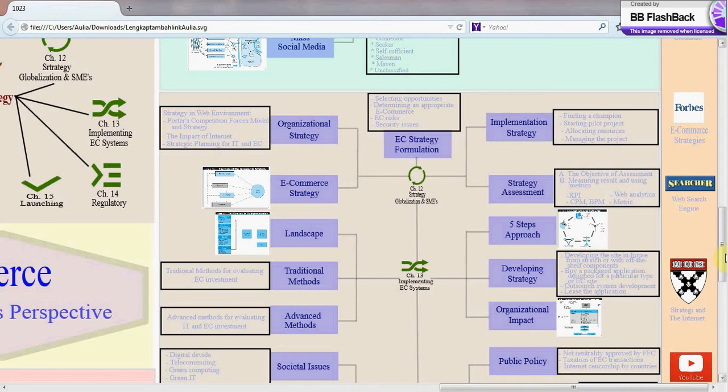What is electronic commerce strategy formulation? The strategy formulation of electronic commerce includes selecting opportunities, determining appropriate electronic commerce, considering e-commerce risks, and thinking about security issues. And organizational strategy includes strategic planning of IT and EC.